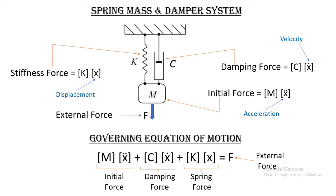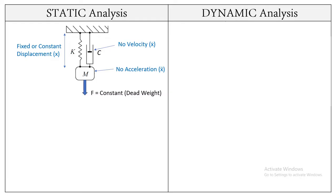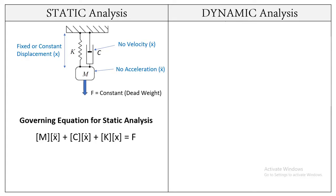This governing equation of motion will change according to the type of analysis. When we talk about static analysis, the constant force because of the constant mass produces some constant displacement X. After that, the system becomes static, and because of that, there will be no acceleration and velocity in the system. Therefore, the inertial component and the damping component of force are going to be zero, and we get the final governing equation for static analysis: the product of the stiffness matrix and displacement matrix is equal to the external force.